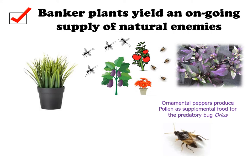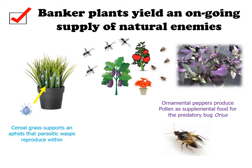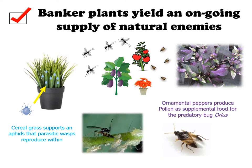In contrast, the aphid banker plant system uses cereal grasses to support an aphid that won't attack most commonly produced crops. A parasitic wasp, Aphidius colemani, uses this aphid for reproduction. The wasps then disperse from the system into the crop in search of green peach or melon aphid.